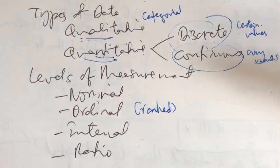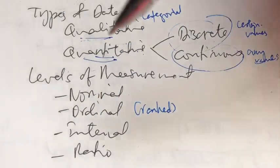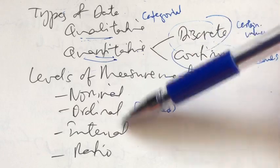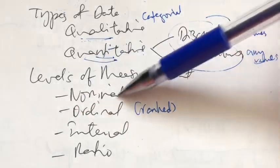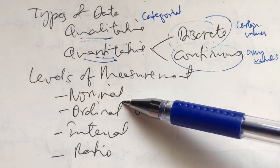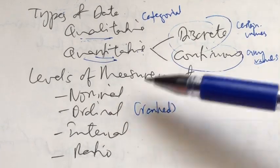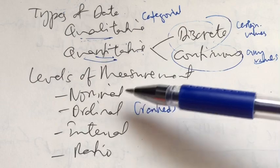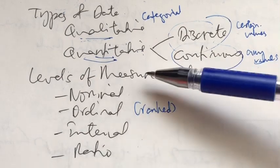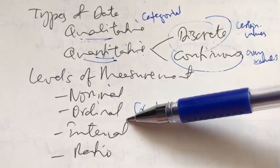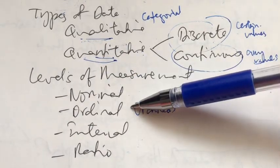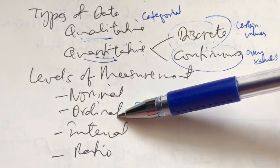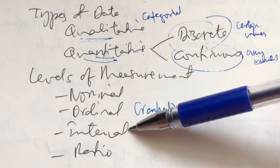The last thing we learned under Topic One is levels of measurement, also called scales of measurement. There are four levels. The first is the nominal level, where data is measured not by numbers but by names or labels — that is why nominal is the lowest level, because there's no actual measurement involved. The second is ordinal, which is basically nominal but with the advantage that data can also be ranked or ordered, making it slightly stronger than nominal.